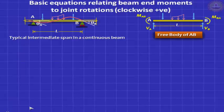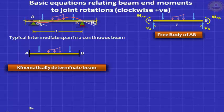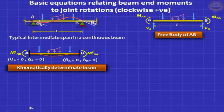The simplest way to start is to take the kinematically determinate structure — we arrest theta A and theta B, giving a fixed-fixed beam. The starting point in all displacement methods is you should know what happens in this condition, which means you should know the fixed-end moments. With theta A, delta A equal to 0 and theta B, delta B equal to 0, you get fixed-end moments MFAB and MFBA. You can get them from tables or derive them using the conjugate beam method.